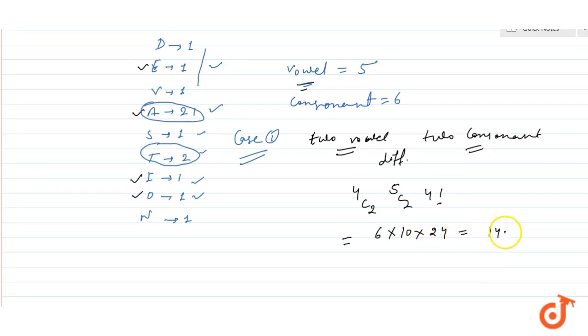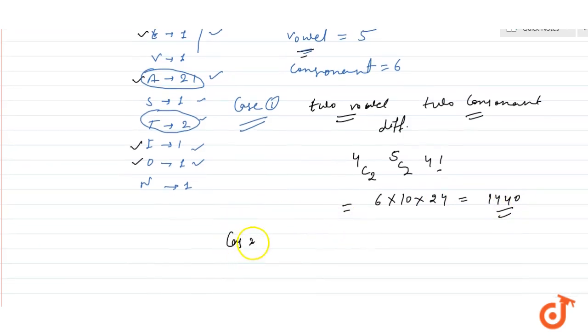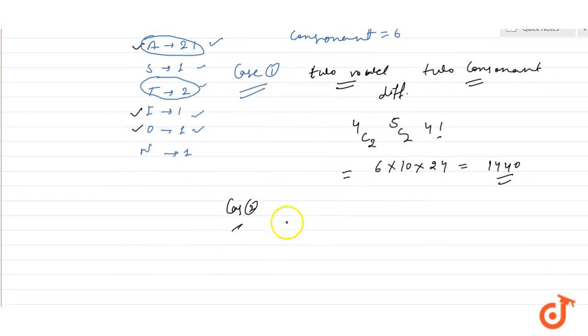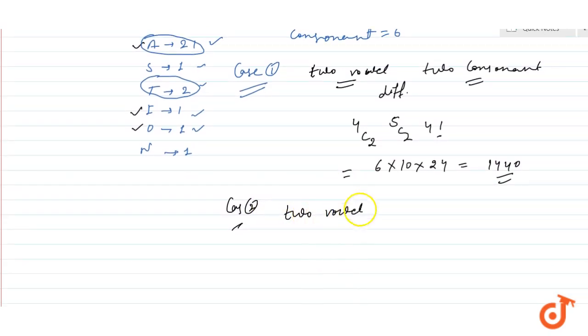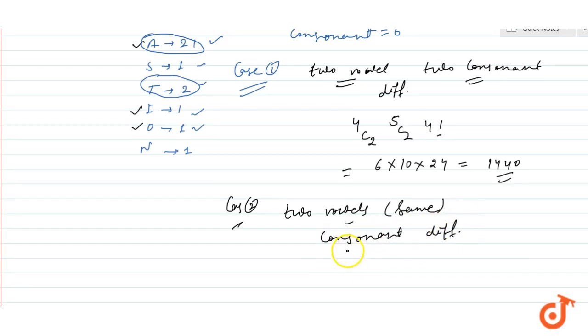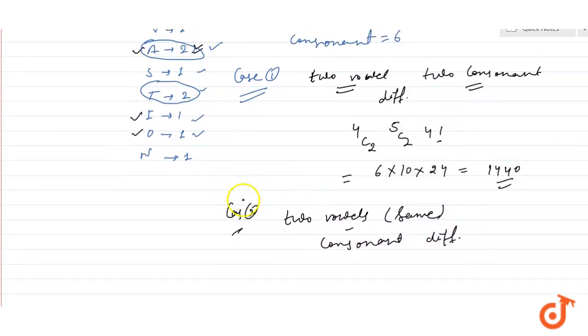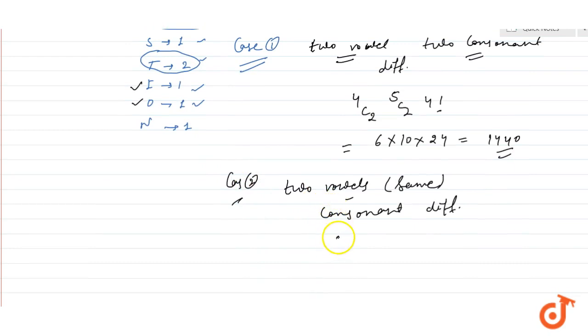Case 2: What we have is two vowels are same and the consonants are different. So 5C2 and 4 factorial upon 2 factorial. So this is 10 into 12, which is 120.